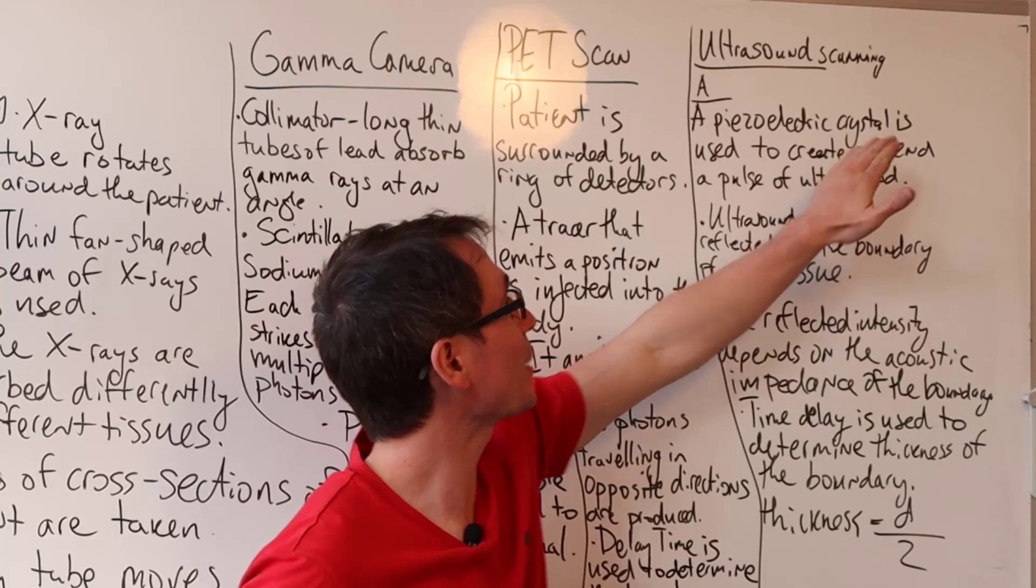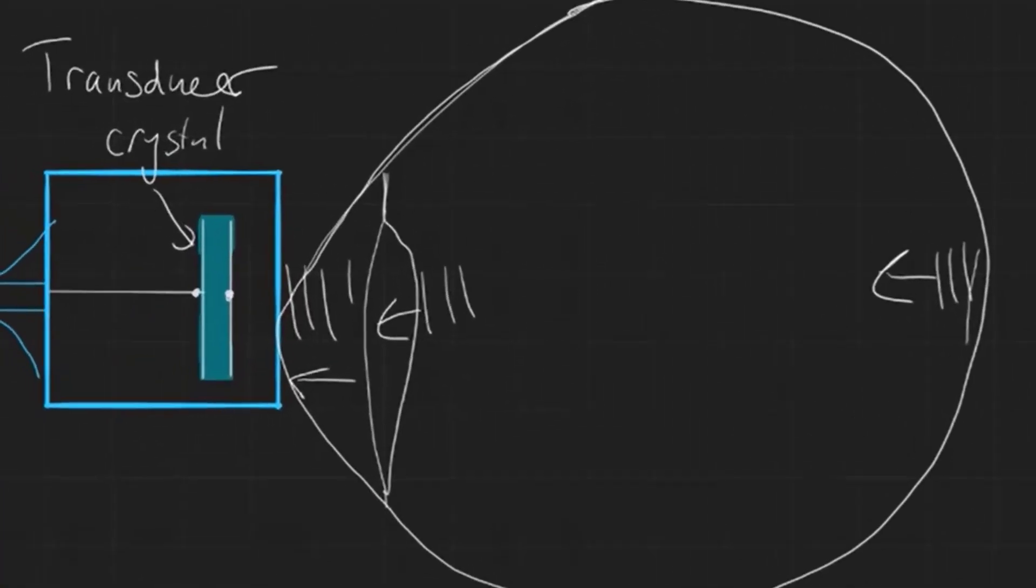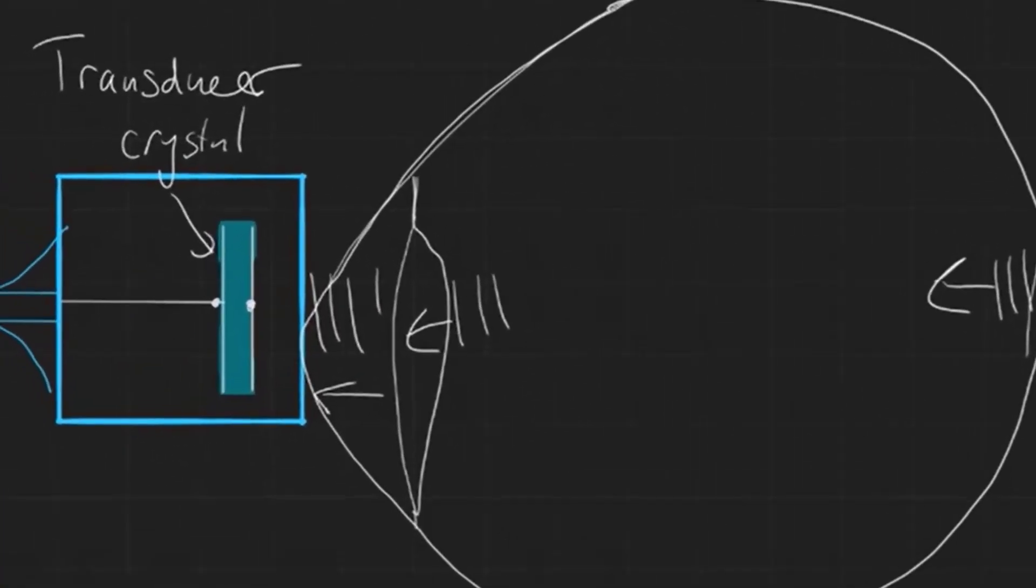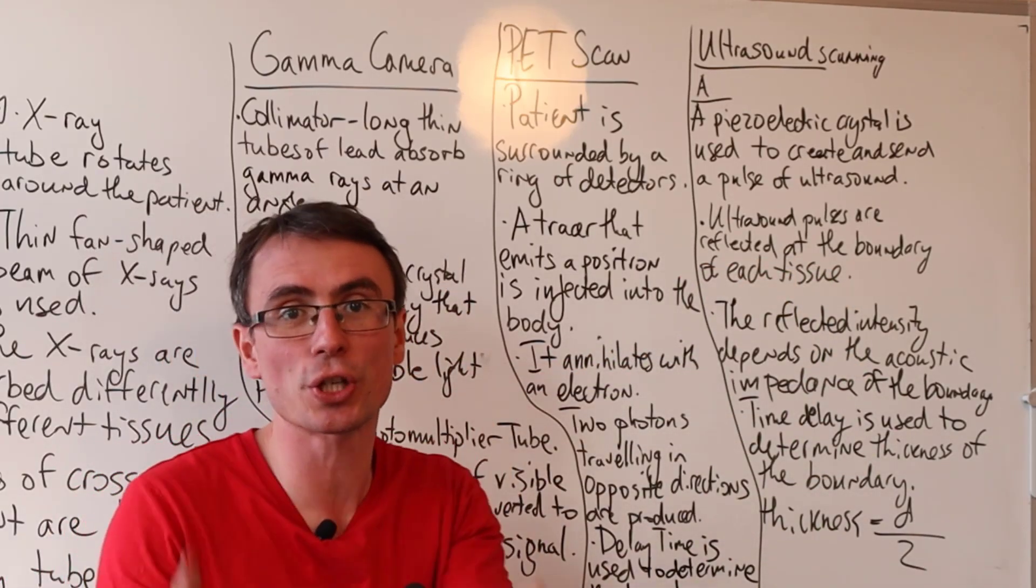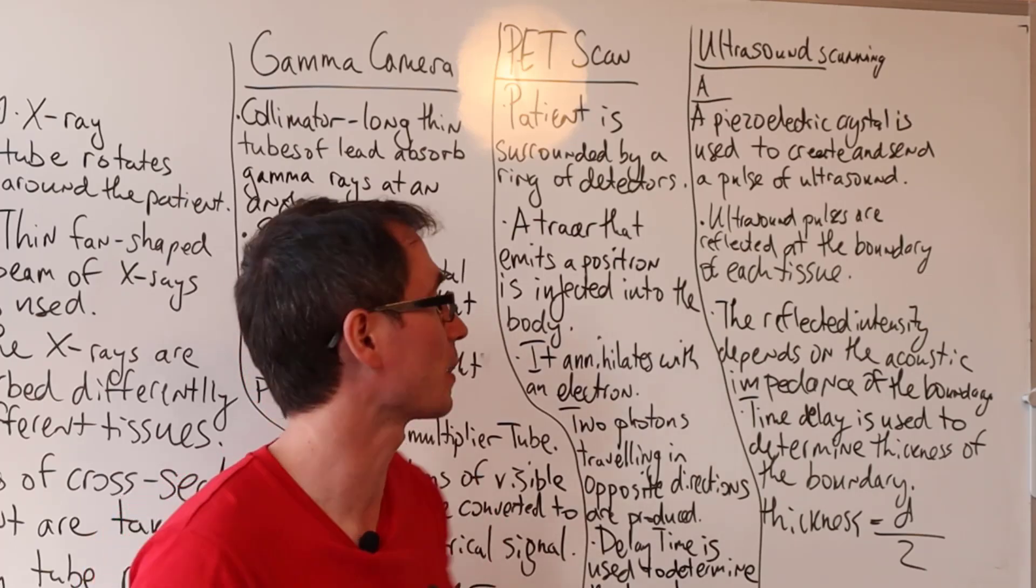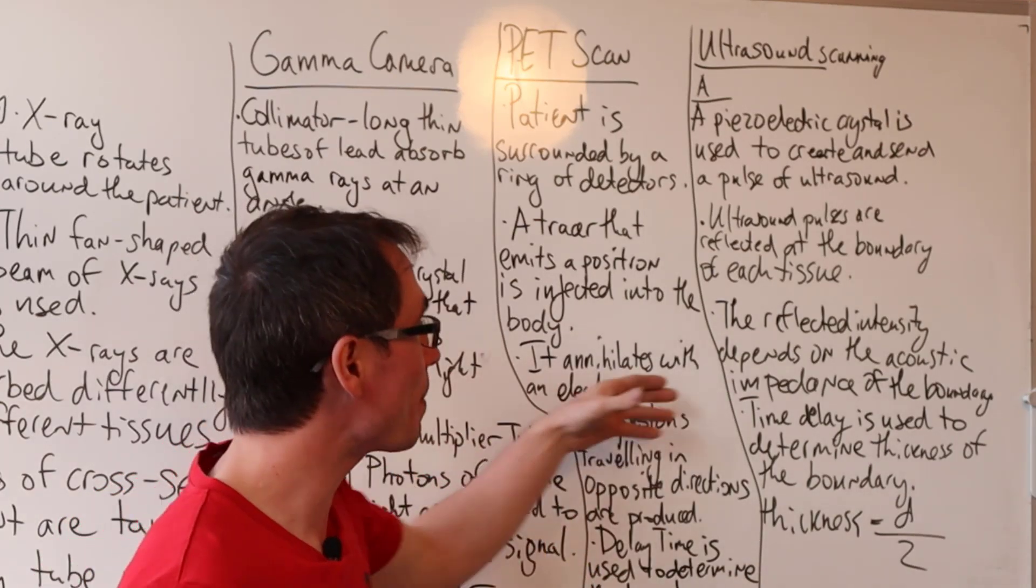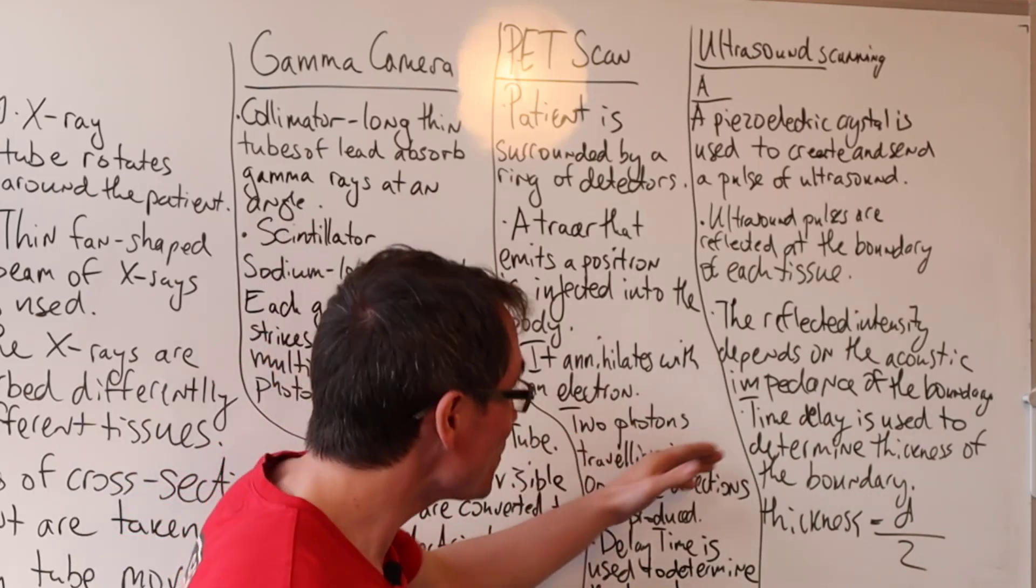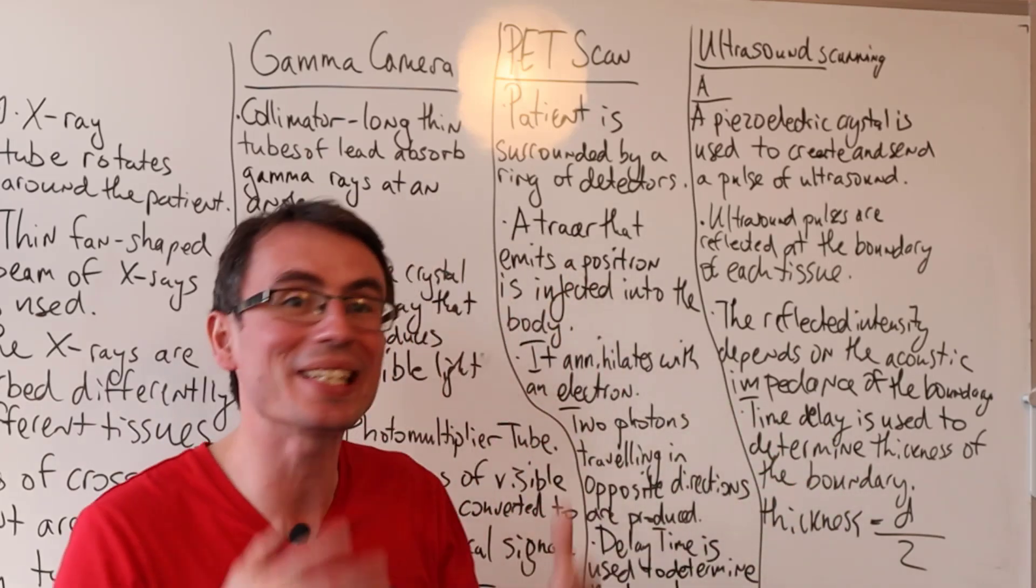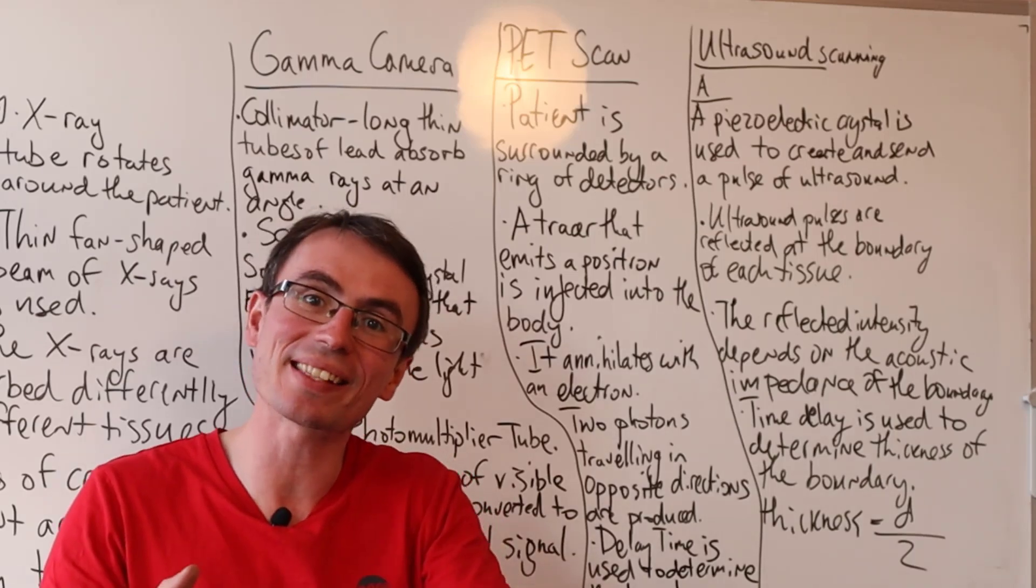First of all, we use a piezoelectric crystal to create and send a pulse of ultrasound. They're reflected at the boundary of each tissue that we're actually imaging. The reflected intensity will depend on the acoustic impedance at the boundary. And you can use the time delay to determine the thickness of the boundary.